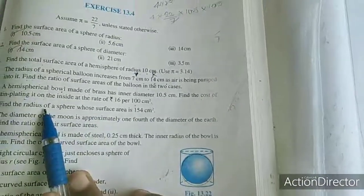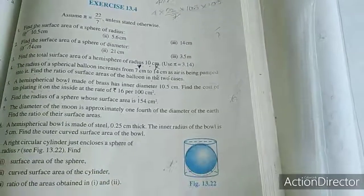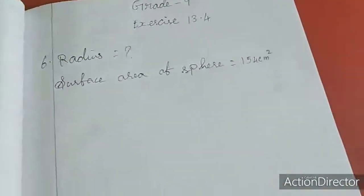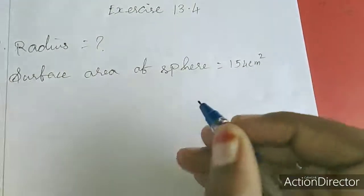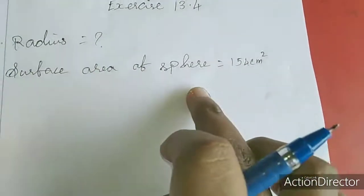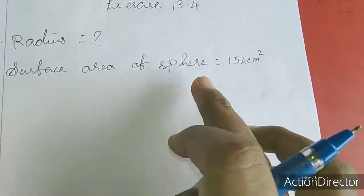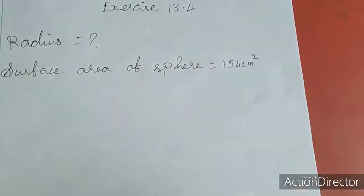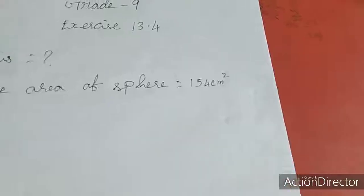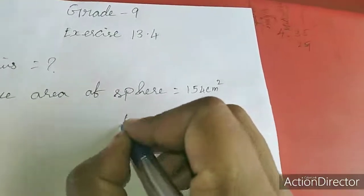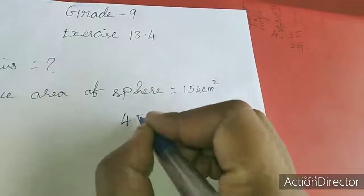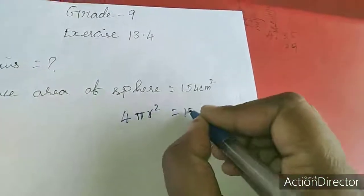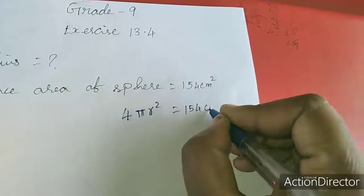They are asking for the radius. I will work it out. Radius is what we need to find. The surface area of a sphere is 4πr². So, 4πr² = 154 cm².